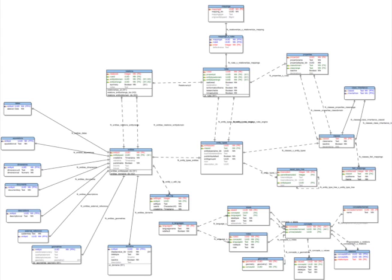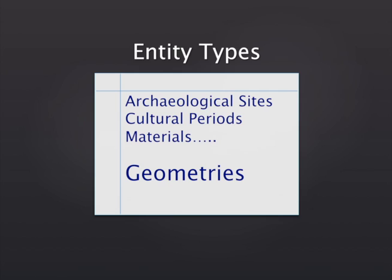It starts with a table called the entity types table — a table that stores your complete listing of all the data objects you wish to manage in Arches. That would include things like archaeological sites, artifacts, cultural periods, materials, people, events, all those things, down to a very fine level of detail, including things like record compilation date. Anything you want to track in Arches goes into this table, including geometries. This is the class of things that you care about — what I'm really talking about are classes or categories of information.